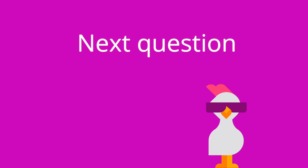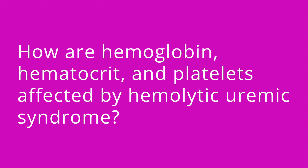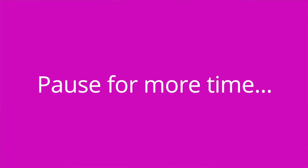Question number two: how are hemoglobin, hematocrit, and platelets affected by hemolytic uremic syndrome? The answer is they will all be decreased.